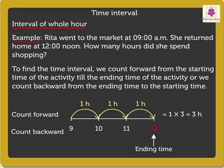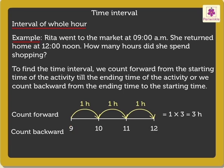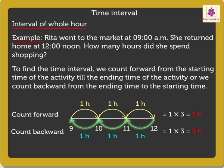Now let us count backward at an interval of 1 hour, that is from the ending time 12 noon to the starting time 9am. On counting backward by 1 hour from 12 noon, we reach 11am. Then 11am to 10am, and lastly 10am to 9am. Here too, we skip counted thrice at an interval of an hour and got the answer as 1 multiplied by 3, which is equal to 3. Did you notice, counting forward or backward gives the same answer? Thus, we say Rita spent 3 hours shopping.